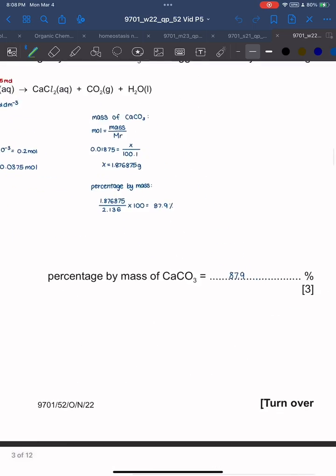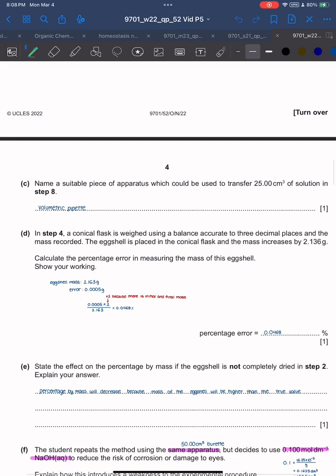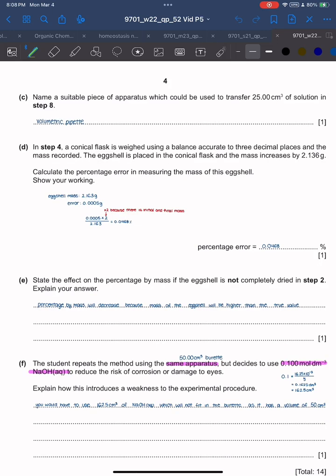Name a suitable piece of apparatus that could be used to transfer 25.00 cm³. Pay attention to the number of decimal points - 25.00 cm³ - so it's a volumetric pipette. In step 4, a conical flask is weighed using a balance accurate to three decimal places and the mass increases by 2.136 grams.